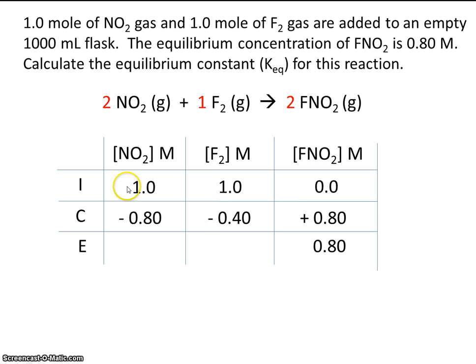So if we start with one mole, and the value goes down by 0.8, at equilibrium, we should have 0.2. That's reasonable. Similarly, if we start with one mole, and the value goes down by 0.4, we should be left with 0.6.